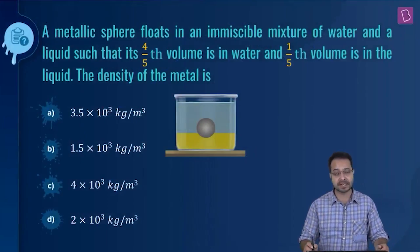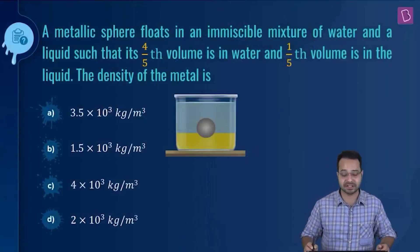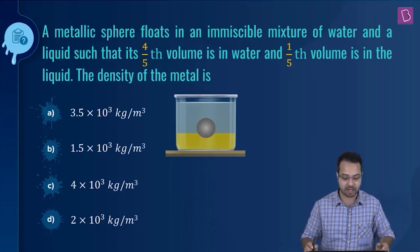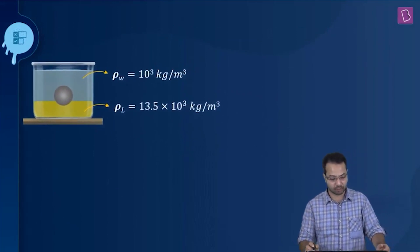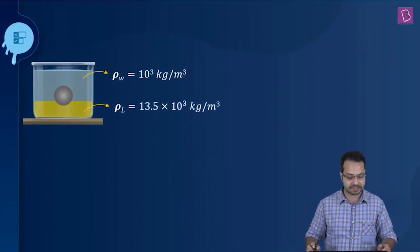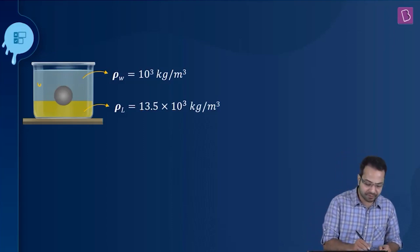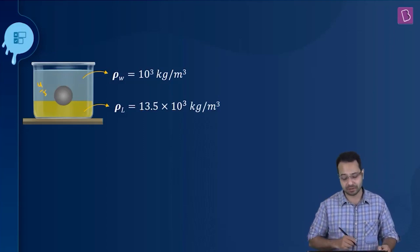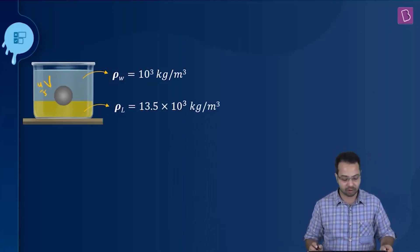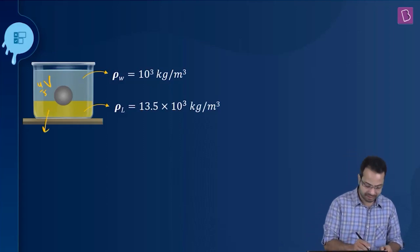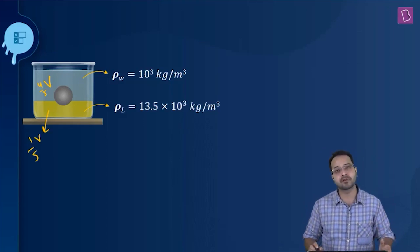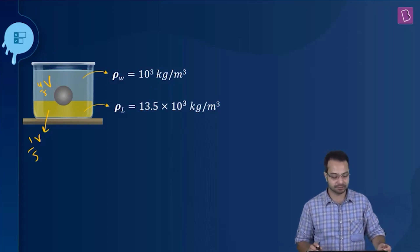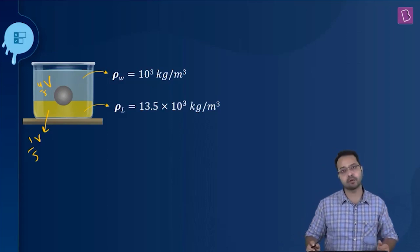Next problem: a metallic sphere floats in an immiscible mixture of water and a liquid such that four-fifths of its volume is in water and one-fifth is in the liquid. We need to find the density of the metal. We have two immiscible liquids — water and another liquid. The object is four-fifths immersed in water and one-fifth immersed in the other liquid, and it is in equilibrium.